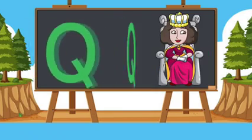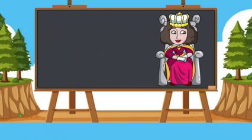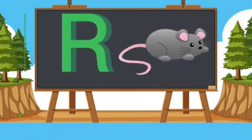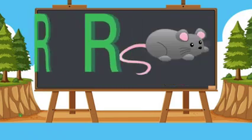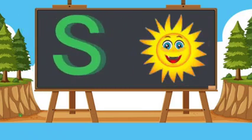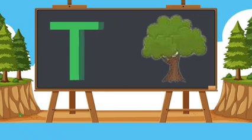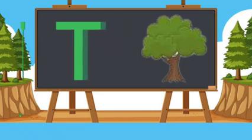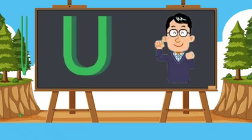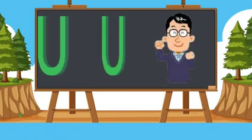Q for queen, R for rat, S for sun, T for tree, U for uncle.